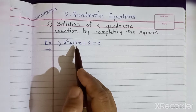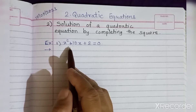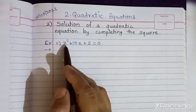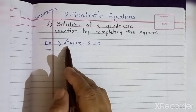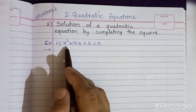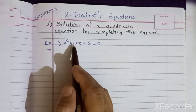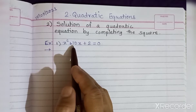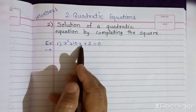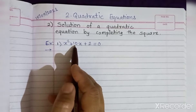So we need to add a suitable term to x² + 10x so that the new expression would be a complete square. According to factorization method, finding the roots of this quadratic equation is very difficult because there are no factors of 2 whose sum is 10. So instead, we are going to add a suitable term to the first two terms x² + 10x.